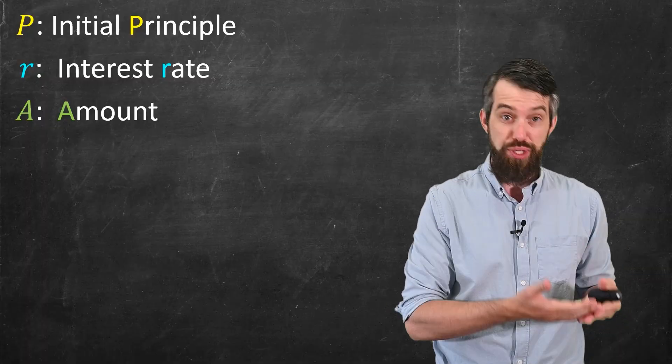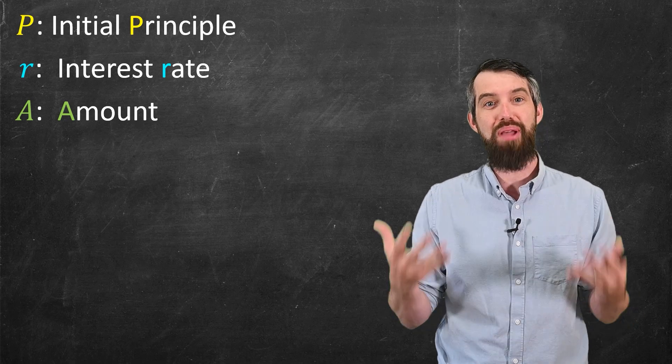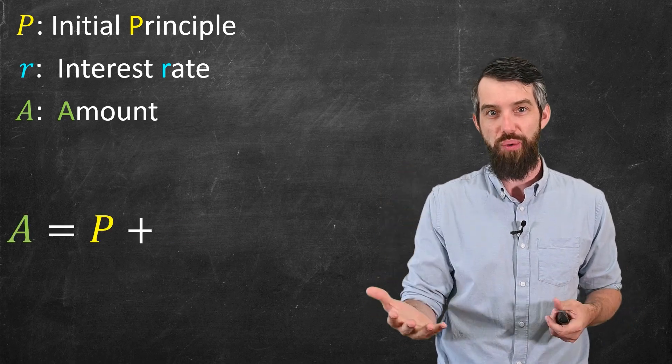So let's try to write down a formula for that. I again have my principal, my interest rate, and the amount A at the end of my loan. Now, if I only have one period, the formula is actually exactly what we saw before.